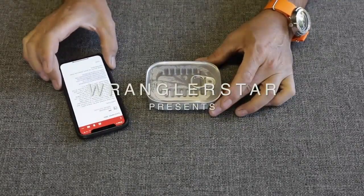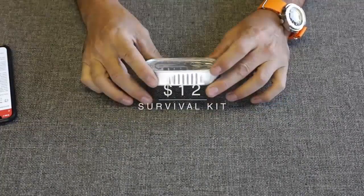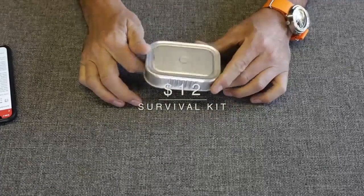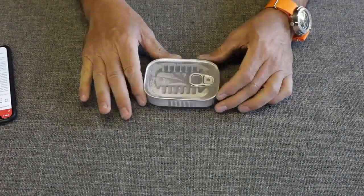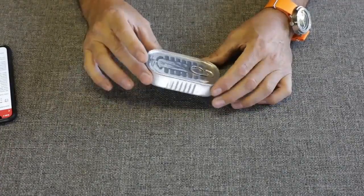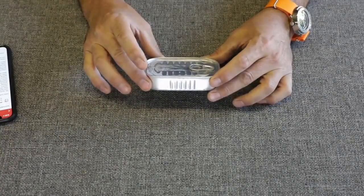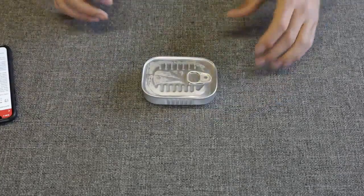A subscriber by the name of Elliot said that he had come across a tuna can or sardine can survival kit on Amazon and wanted me to do a cheapest survival kit review on Amazon video. So that's what we're going to do today.